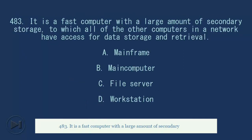483. It is a fast computer with a large amount of secondary storage, to which all of the other computers in a network have access for data storage and retrieval. A. Mainframe. B. Main computer. C. File server. D. Workstation. Answer, C. File server.